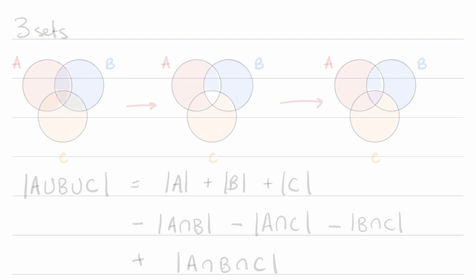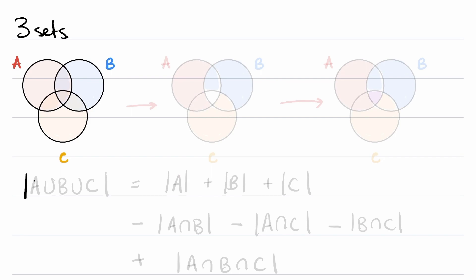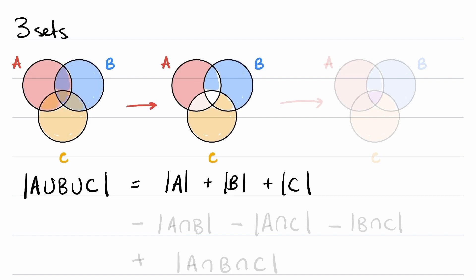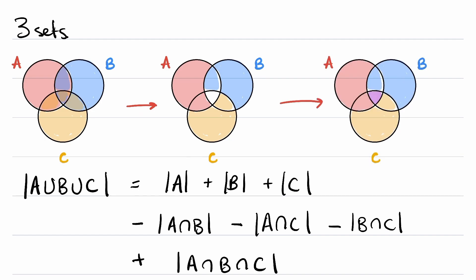To make this clearer, let's talk about what would happen in the case of three sets. Say we had three sets A, B, and C. If I wanted to calculate the cardinality of A union B union C, it turns out that it would be the cardinality of A plus the cardinality of B plus the cardinality of C, minus the cardinalities of the pairwise intersections, plus the cardinality of the intersection of all three.